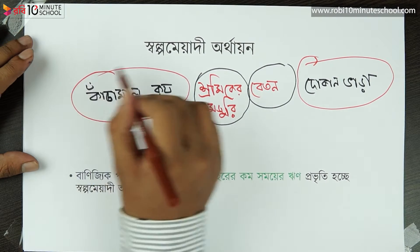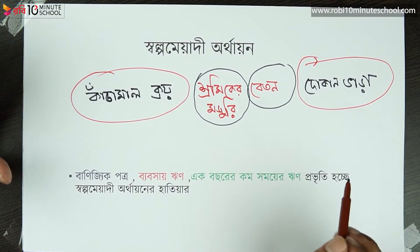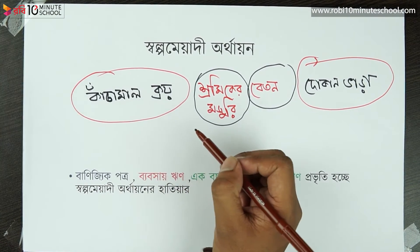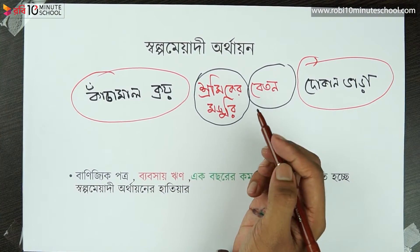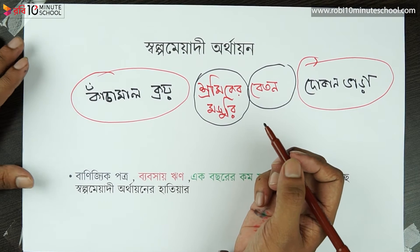What do you want to do in this circular area? In this circular area, we have to look at areas like Kachamal Kroy, Shromikir Mojuri, Beton, and Dokan Bharat.